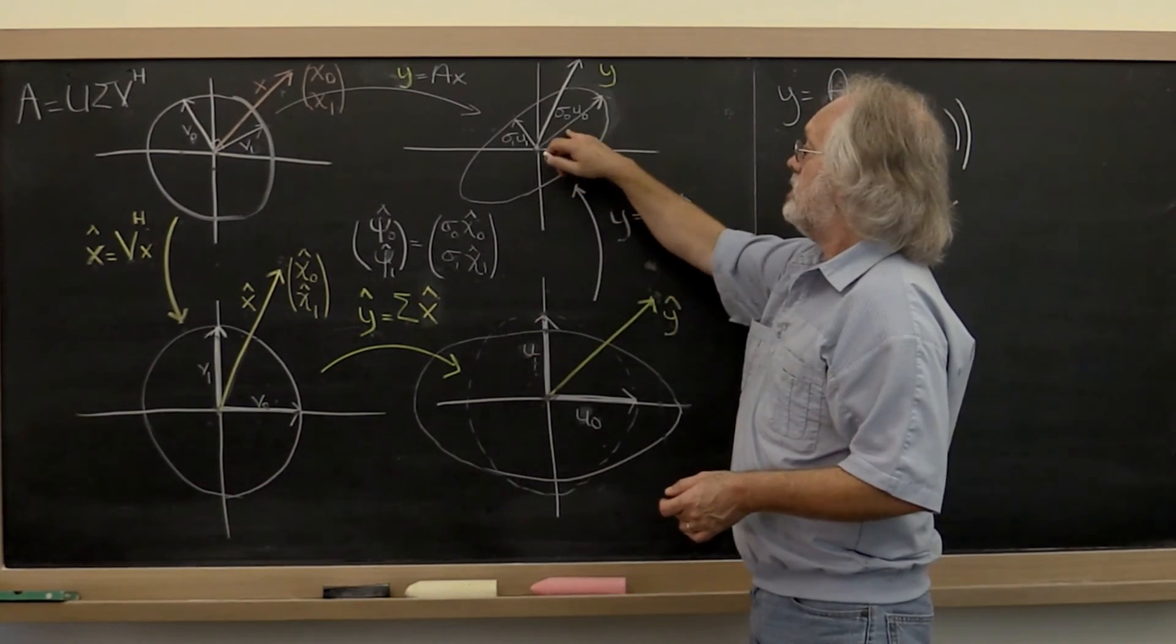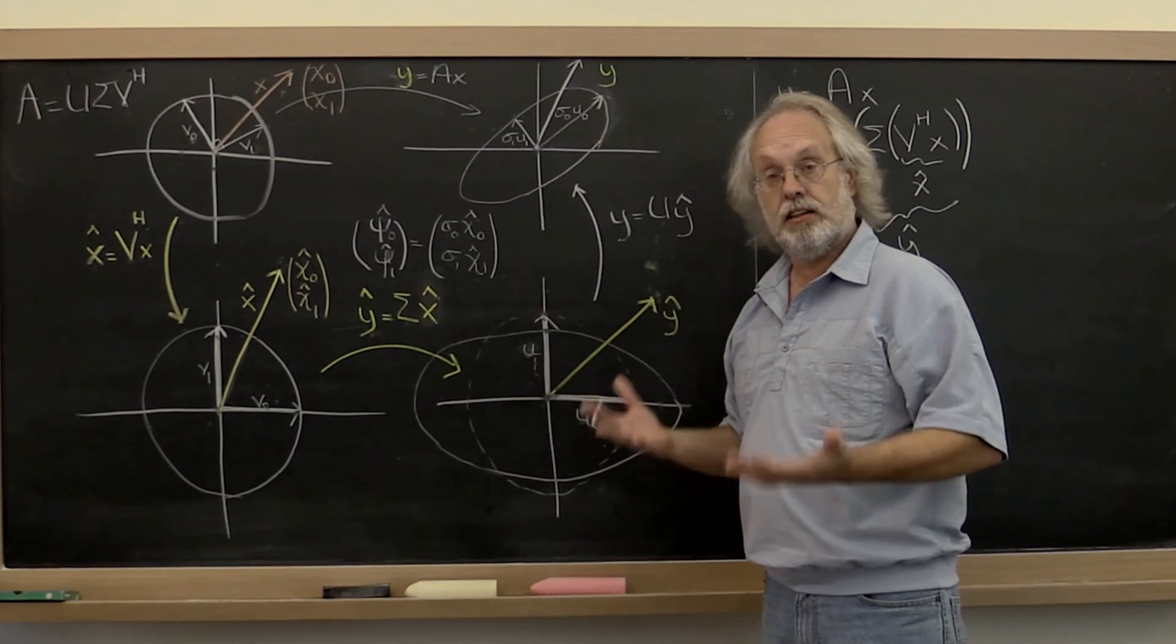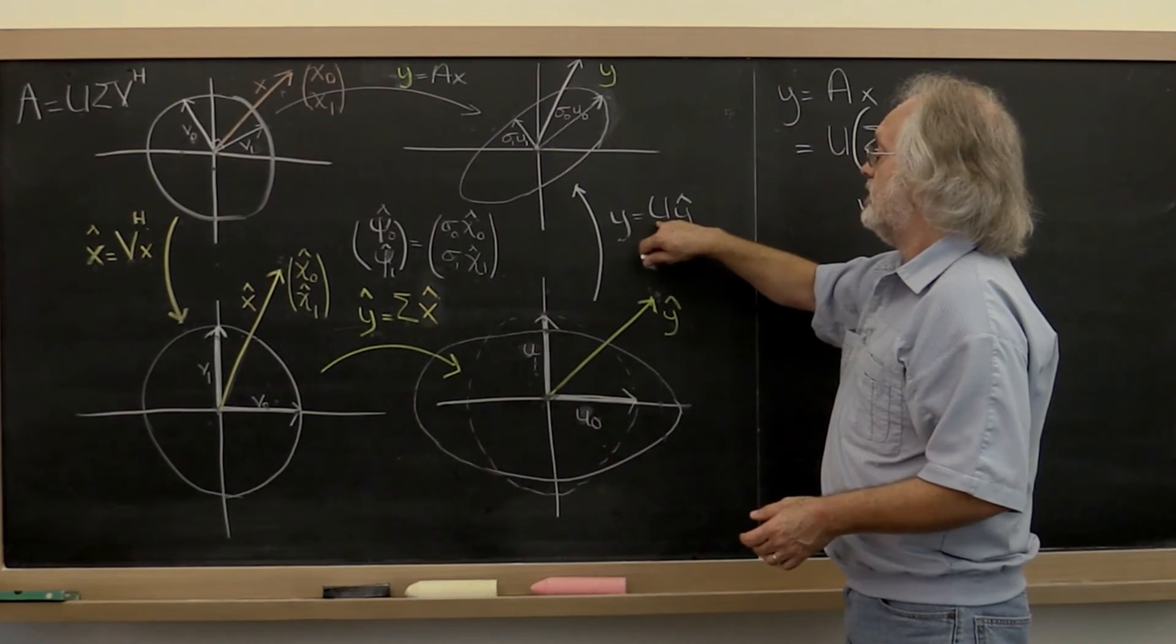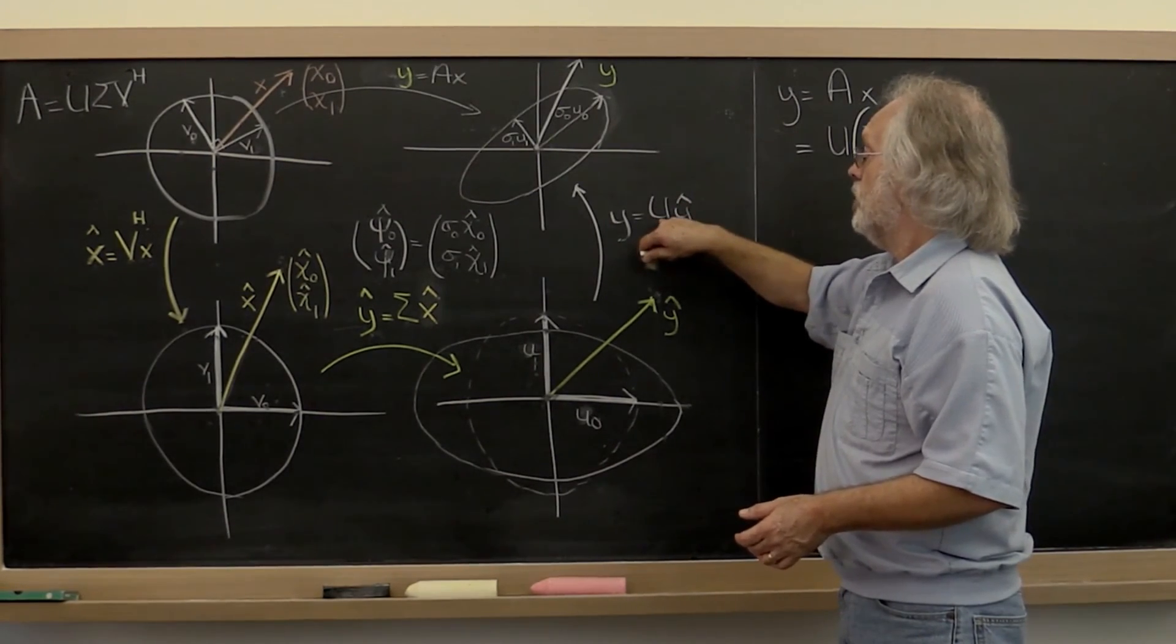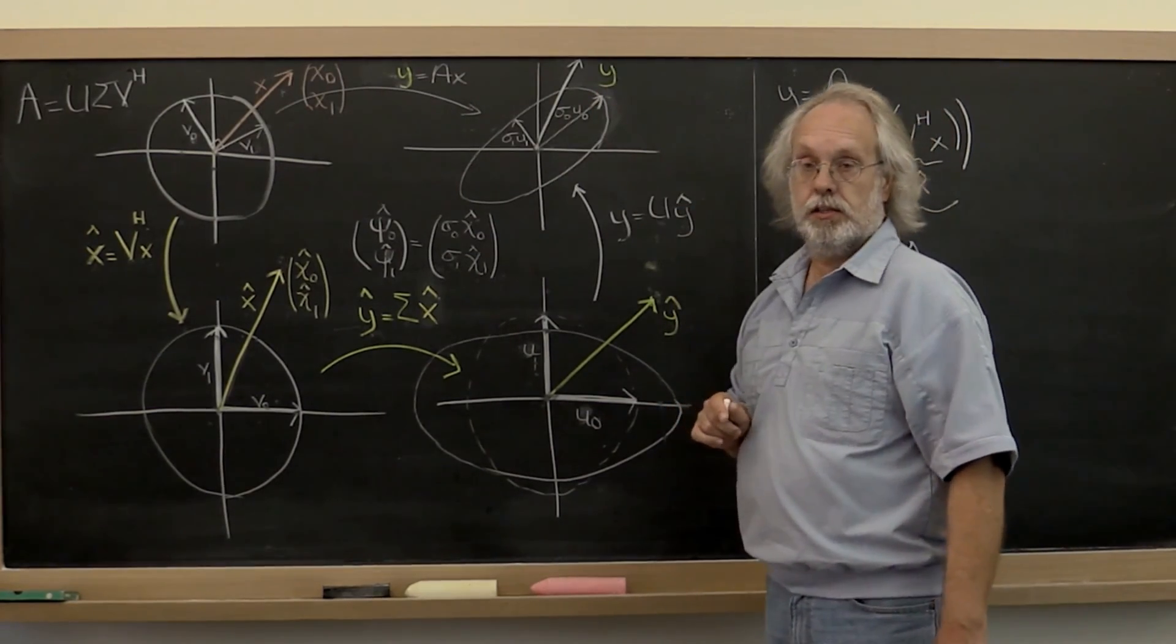So to now express it in terms of the orthonormal basis that consists of the standard basis vectors, all we need to do is U times y hat because that takes the appropriate linear combination of the columns of U and we get our final result, vector y.